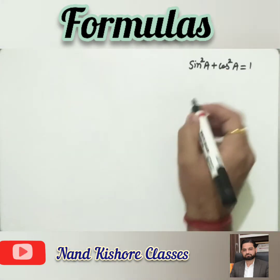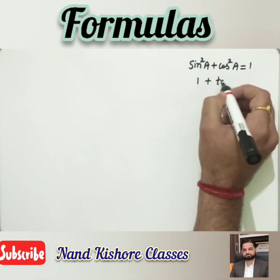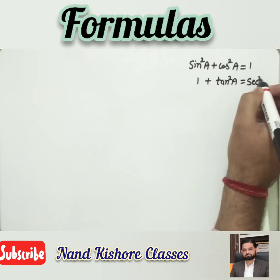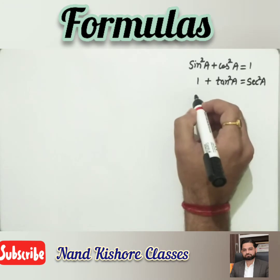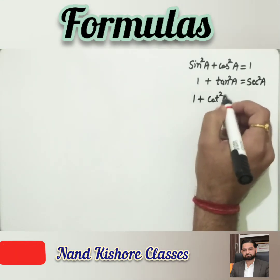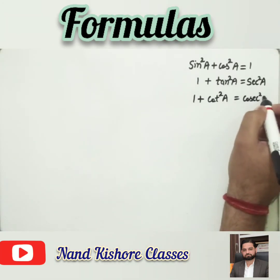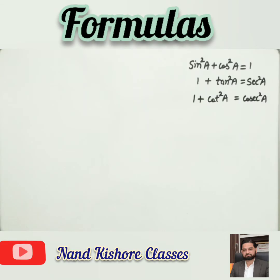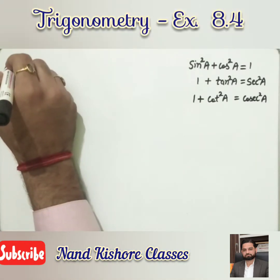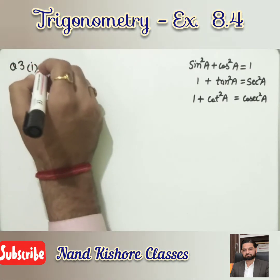Next was 1 + tan²a = sec²a, and the third was 1 + cot²a = cosec²a. So these three formulas we had done in our previous lecture. Let us start question number 3 — we are going to use these formulas in the third question.